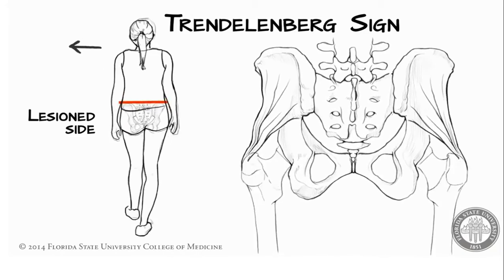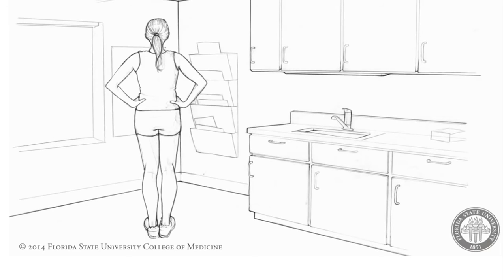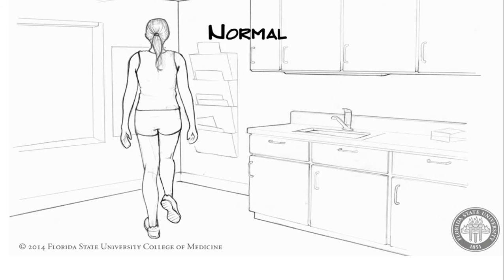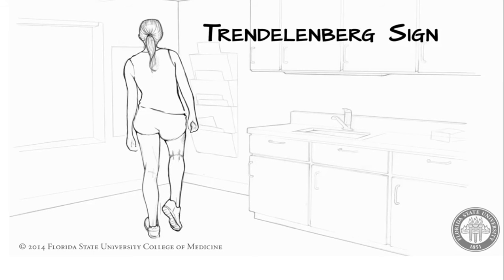The dysfunctional abductor muscles are on the same side as the supporting leg. In the clinic, the simplest assessment is to ask the patient to stand motionless on one leg. If the hip abductors of the supporting leg are intact, the pelvis remains level. If the abductors are injured, the patient exhibits the Trendelenburg sign: the pelvis tilts away from the supported side and the patient either loses balance or compensatorily leans the torso toward the side of injury.